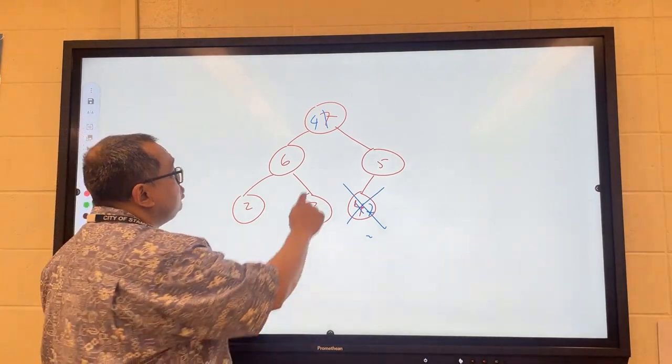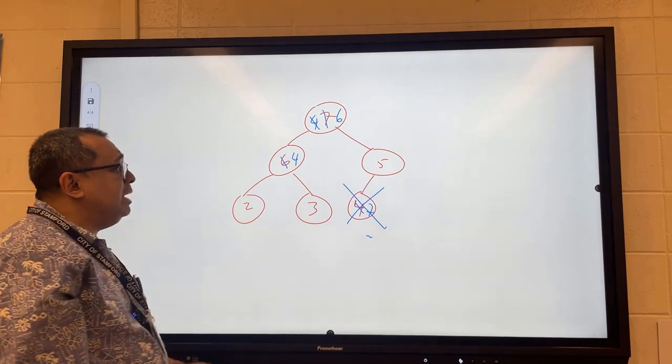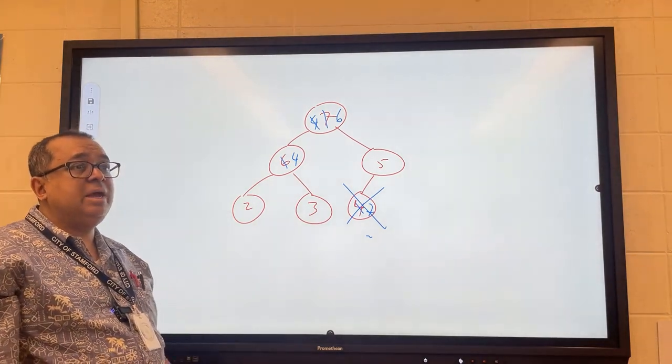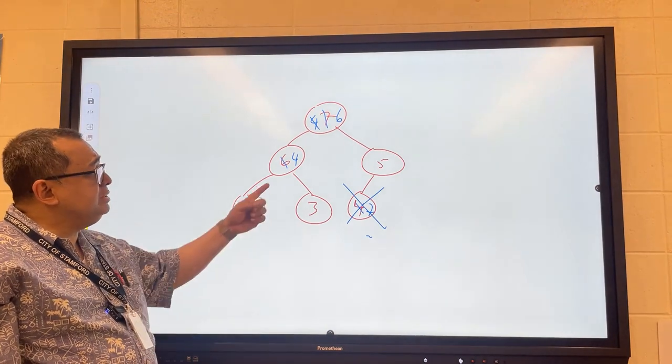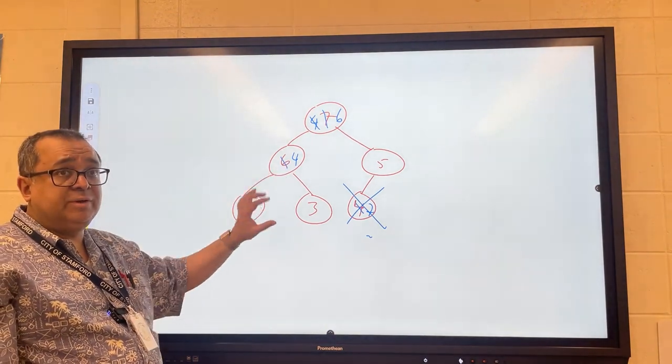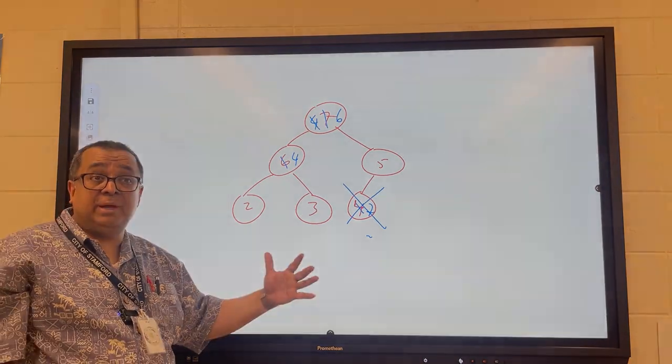So I'm going to swap it with the six—put the six here and the four here. In terms of my bubbling down process, am I finished? Yes, because the four is bigger than the two or three. This is a quick review about how to insert and delete from a heap.